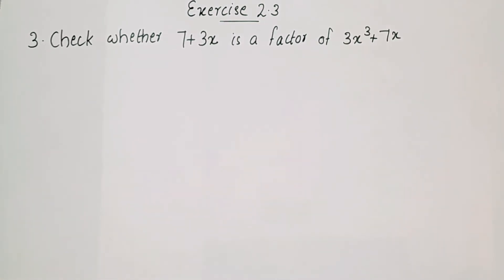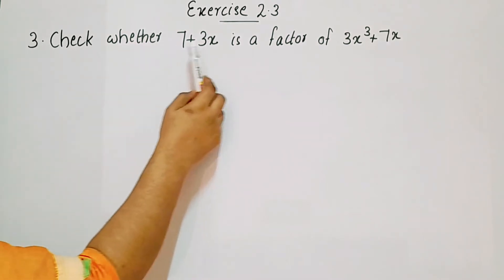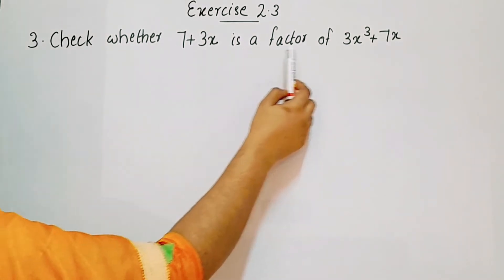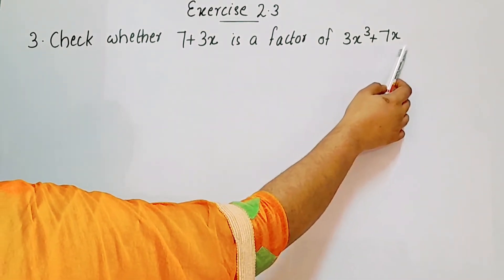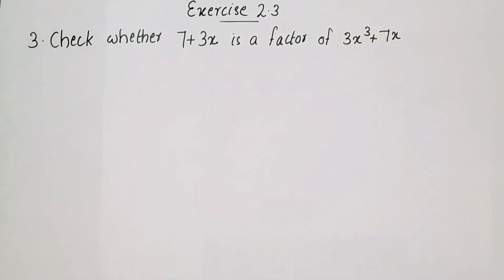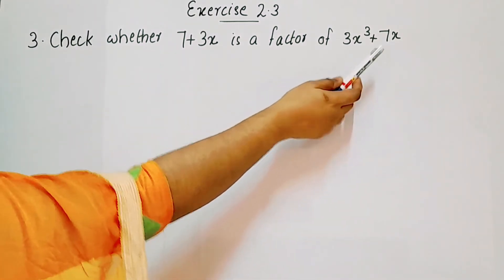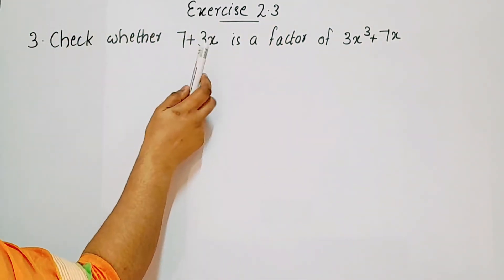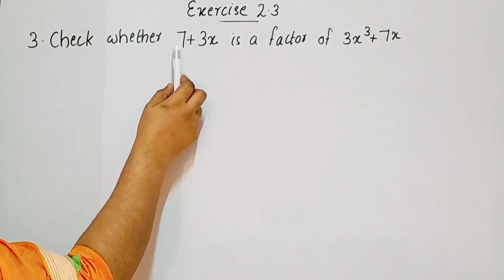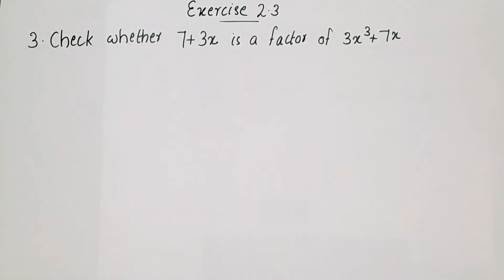Next, the third question: check whether 7 plus 3x is a factor of 3x³ plus 7x. We need to check if 7 plus 3x is a factor of that polynomial using the remainder theorem.